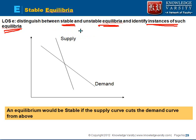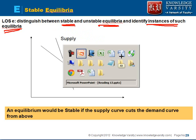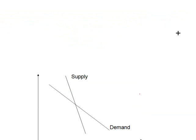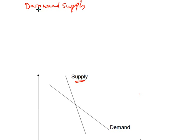We want to understand what stable and unstable equilibrium are. Let us look at a different kind of supply curve — one that is not upward sloping but downward sloping. Note that you can have a downward sloping supply curve. An instance of a downward sloping supply curve is the labor supply curve for wages.